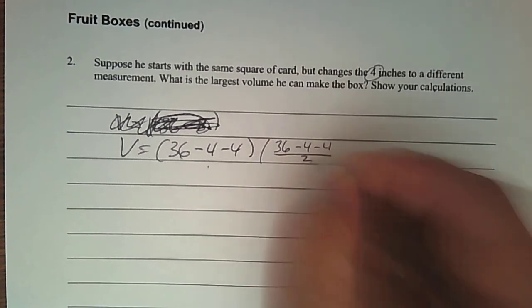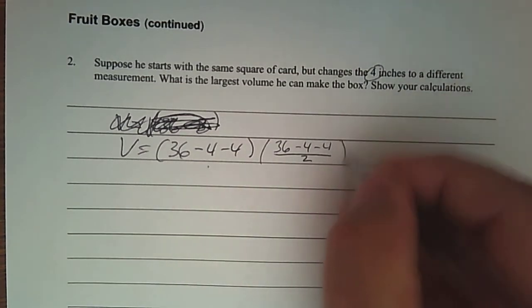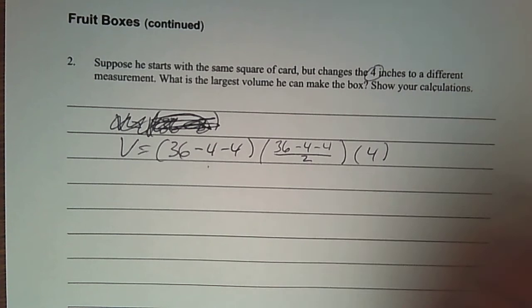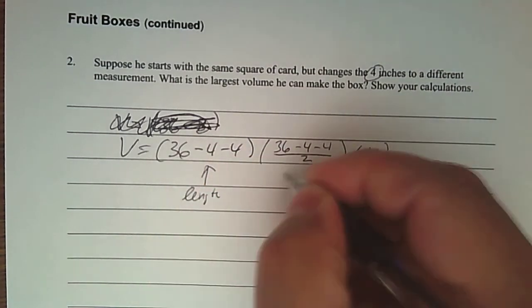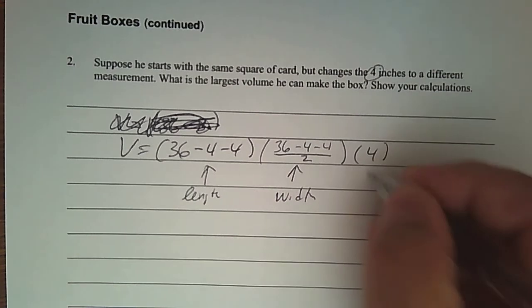The height was four. For the width, remember we took that answer, which was 36 take away four, take away four, and we divided it by two to figure out the width. And the height of it was just four. So this was the length, this was the width, and this was the height.